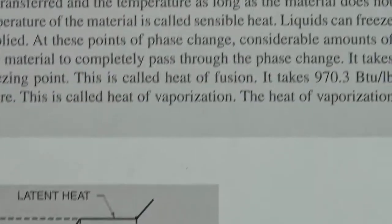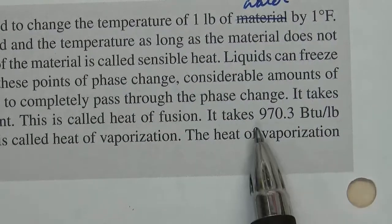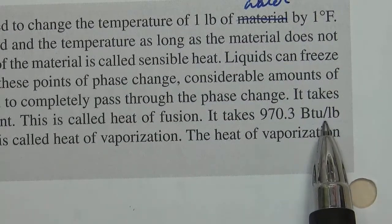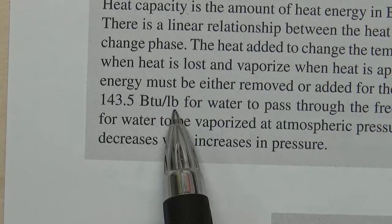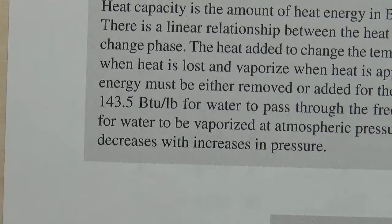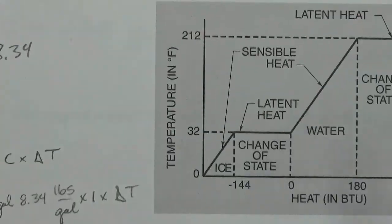They tell us that it takes 970 BTU per pound to make steam, and that it takes 143 BTU per pound to go through the ice to liquid phase change.